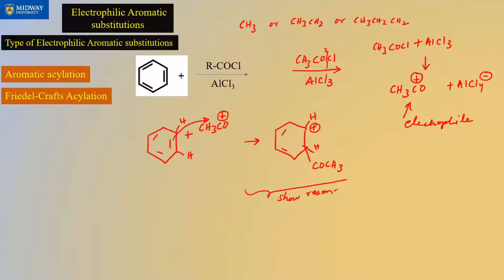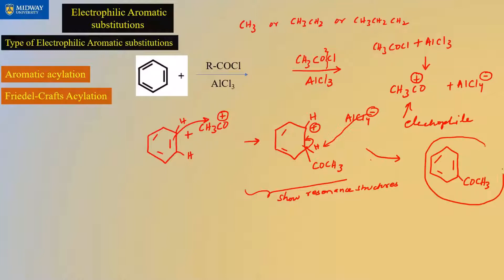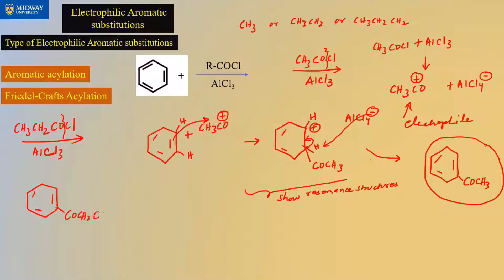Show at least two resonance structures — like I did for halogenation — showing how you move the positive charge and the double bond around. AlCl4− comes in, grabs the hydrogen, the bond comes back, leaving a negative charge that neutralizes the positive charge. So the product has a COCH3 added to the ring. If you had started with CH3CH2COCl and AlCl3, you'd just add COCH2CH3 to the ring.